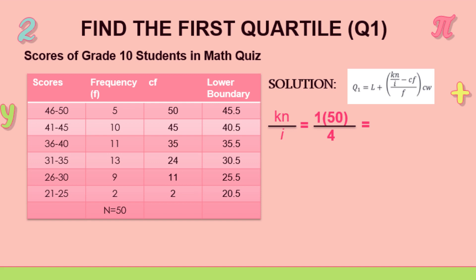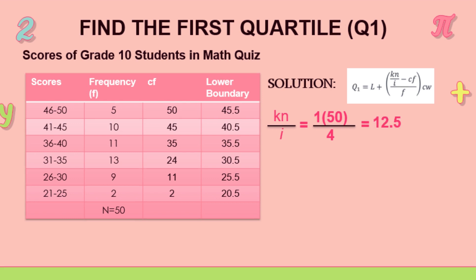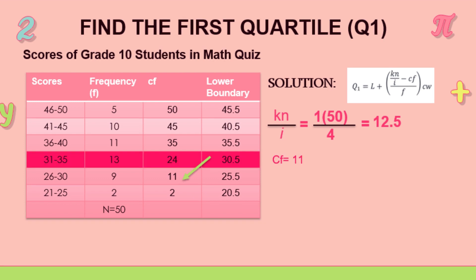That's the first quartile, that's the unknown. And the 50 is the frequency, and all over 4 because it's quartile. And the answer is 12.5. So we're going to look where the 12.5 belongs here in the cumulative frequency. So it is in the range of the 24.